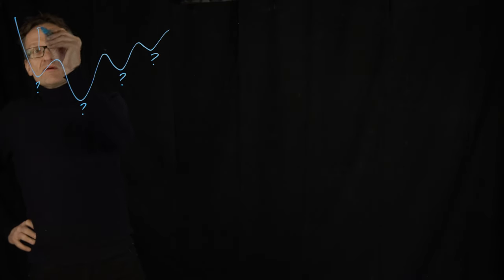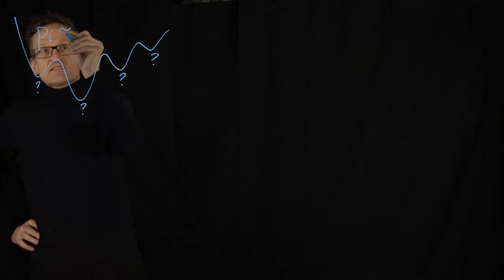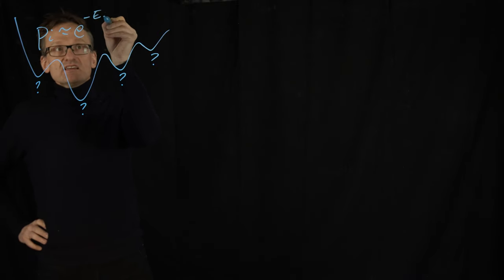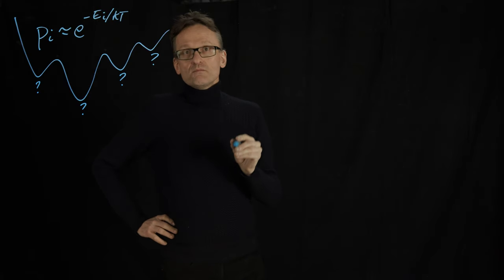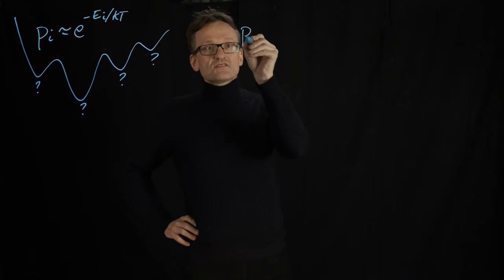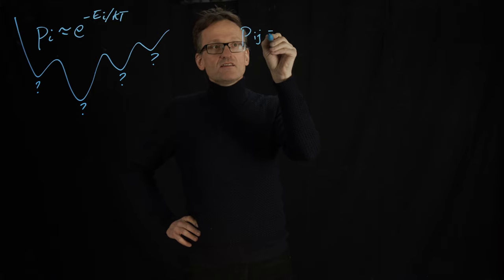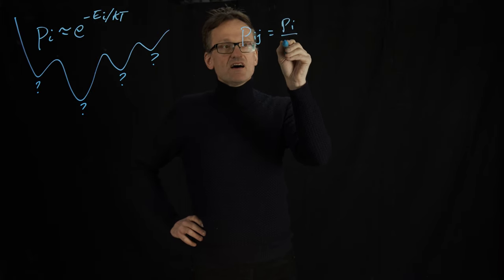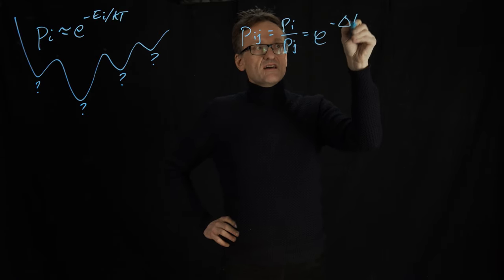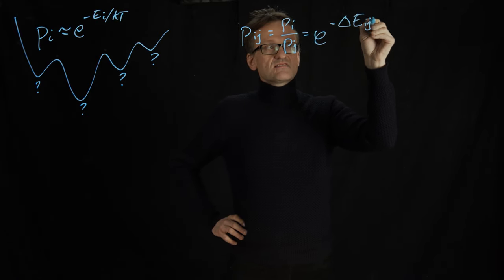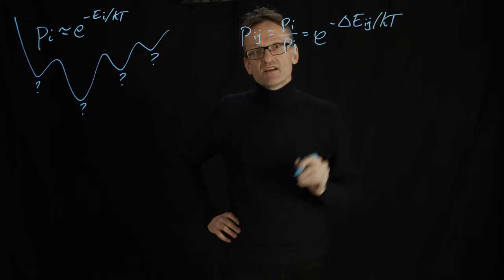So the probability of being in an individual state, that is proportional to e raised to minus Ei divided by kT. But you used something else: you used the relative probability of i and j, Pi divided by Pj, which is e raised to the energy difference between states i and j divided by kT.